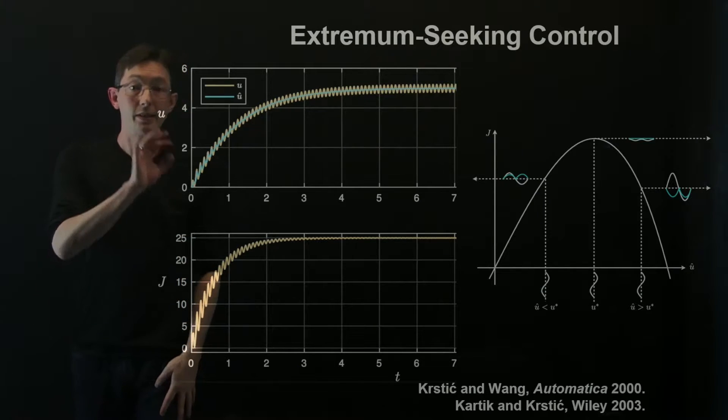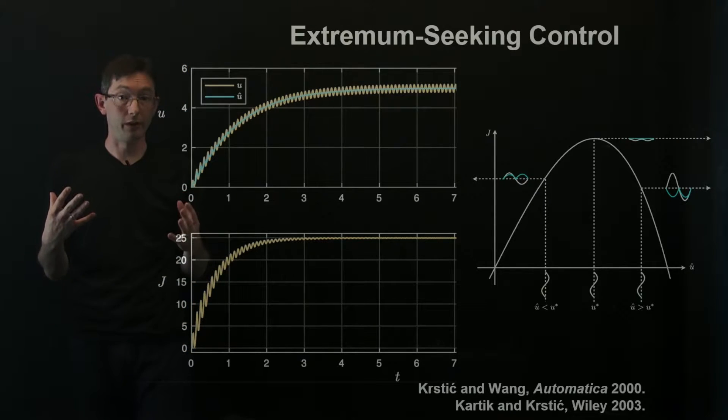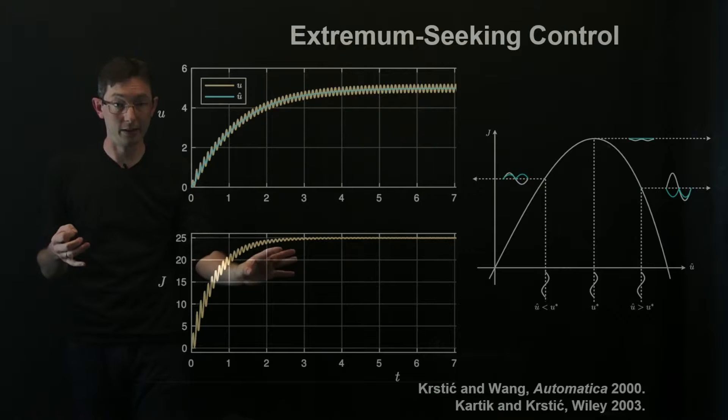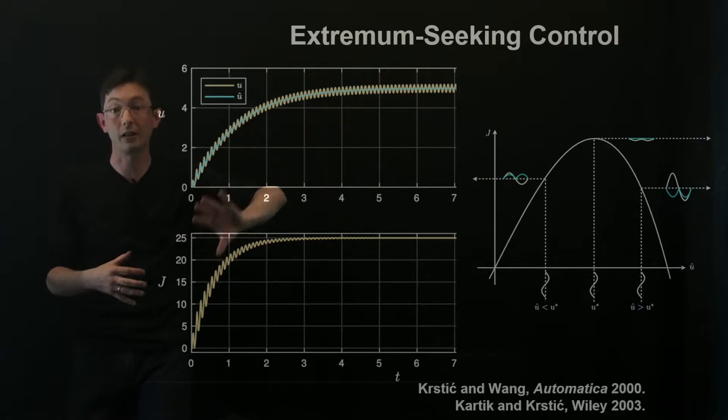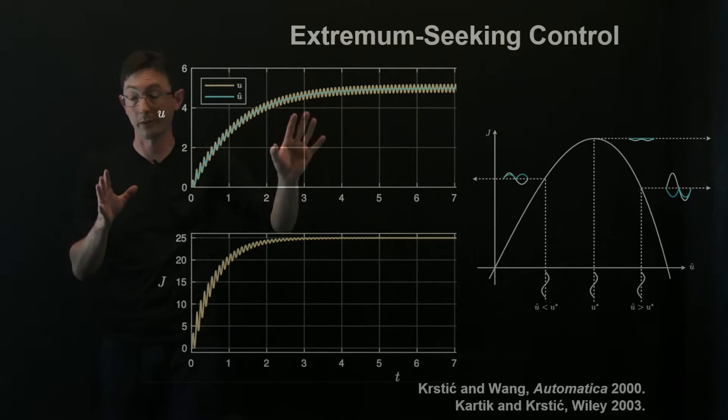Okay, so this is the basic architecture of extremum seeking control on a data set. Now what we're going to do is we're going to code this up with this type of cost function and we're actually going to reproduce these curves.